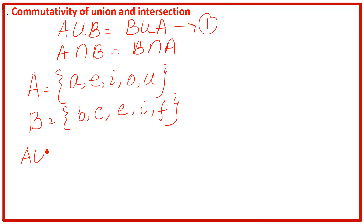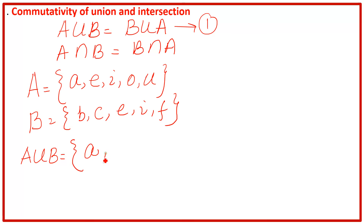First is A union B. Union means you have to write down each and every element of both sets — those present in A and those present in B — but if some elements are common, meaning present in both sets, we write them down only one time. A union B: A is here, A is not in B but we write it down because in union we include each and every element. E is present in both A and B so we write it down only one time.